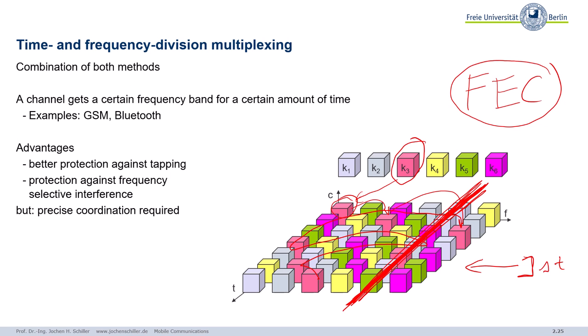These three classical multiplexing technologies — space, time, and frequency — are called classical because we already know them from fixed, wired networks. In a cable you see many tiny copper wire pairs: each pair can carry a transmission, which is space division multiplexing. This is the classical old telephone line.